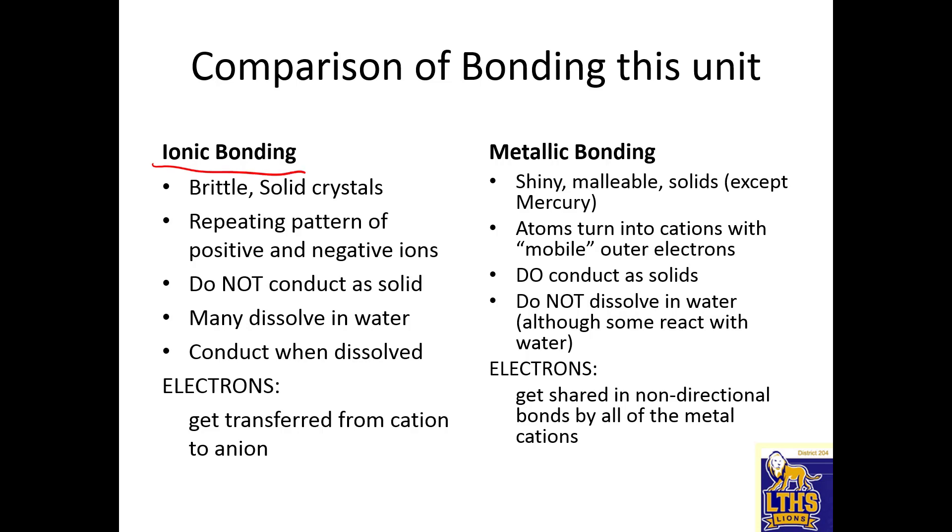You got your positive nucleus with the core electrons, and then the valence electrons of all of those metal atoms are being shared by all of the other metal atoms. Yay, sea of electrons, delocalized. So far in this unit, we've talked about ionic bonding. Please tell me you know these properties. And please tell me you know these ones now about metals.